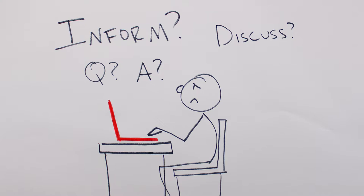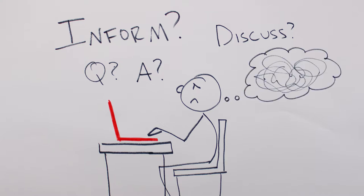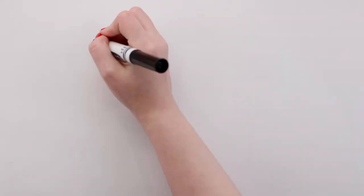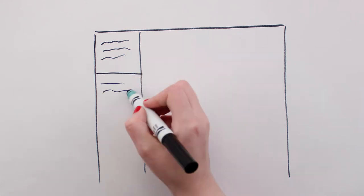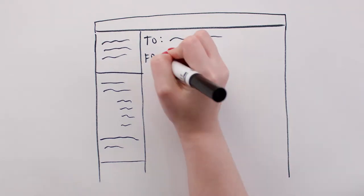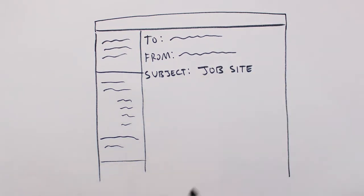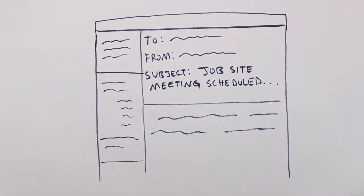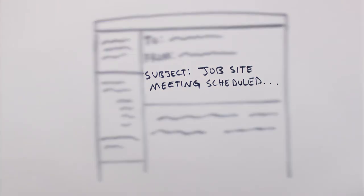Use and abuse subject lines. If the purpose can be stated clearly in the subject line, do it. Emails with subject lines like 'job site meeting scheduled for Monday at 9' leave absolutely no ambiguity. I've sent many emails in which the entire message was stated in the subject line only and contain no text in the body except my signature.